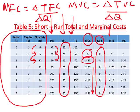As far as MTC goes, there are two ways to calculate it. One is you can simply add MVC and MFC: 5 plus 0 is 5, 3.57 plus 0 is 3.57, and so on. Another way is to look at change in total cost divided by change in output, and again you will get the same answer. This is how we calculate MTC.